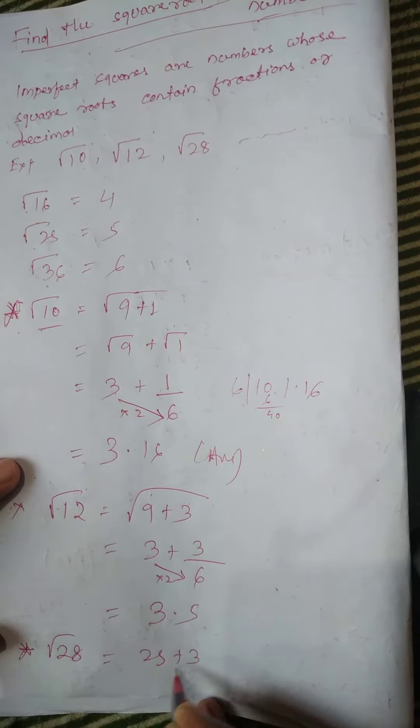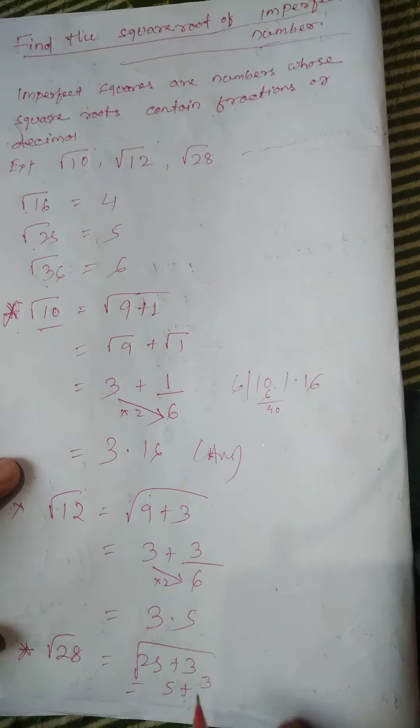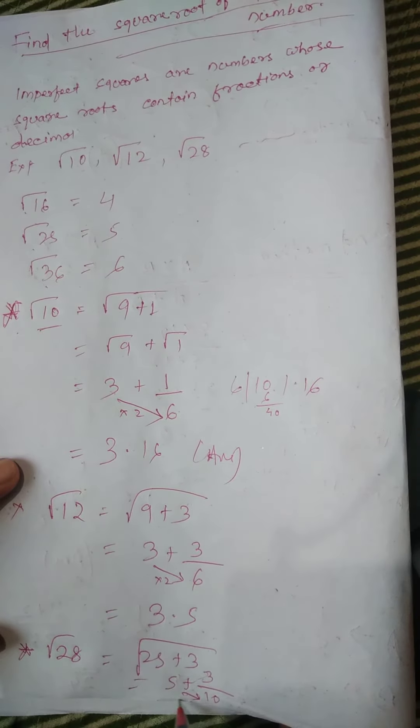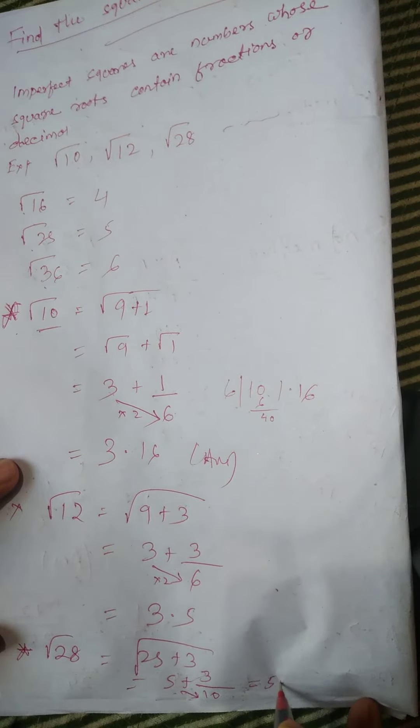25 plus 3, 5 plus 3 by 10. 8 double is 5 to the 10 double, giving 5.3.